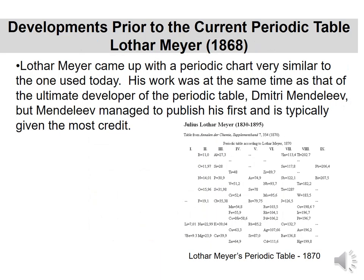Then we come to 1868, which is Meyer. Meyer says if you line these elements up — boron, carbon, nitrogen, oxygen, fluorine going down — they have changing properties going down, but similar properties going across. This is sort of reversed from what we use today; today we have the columns and rows opposite of what he had.